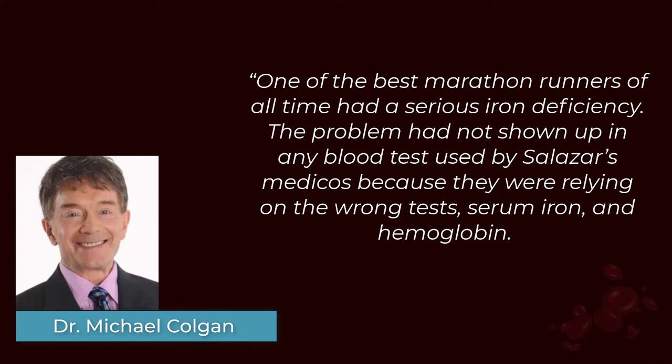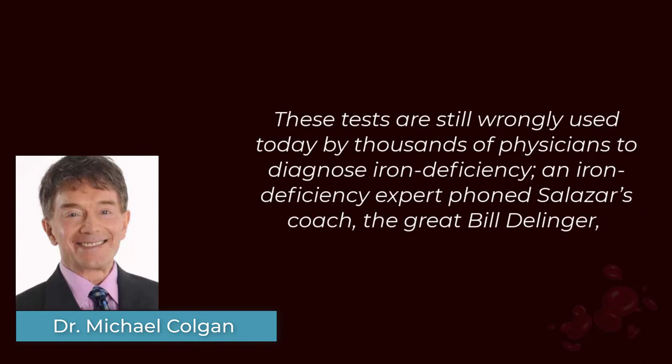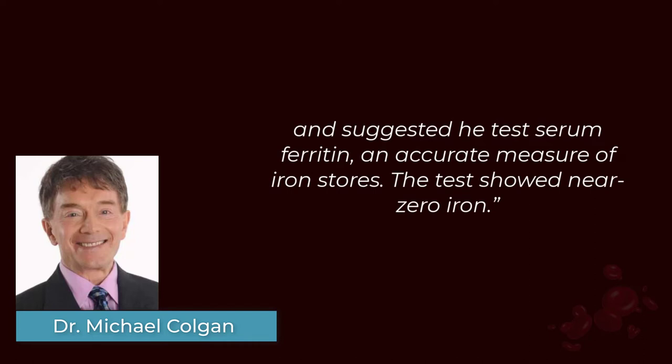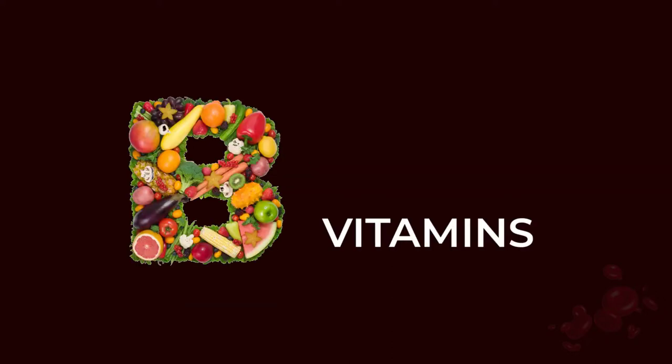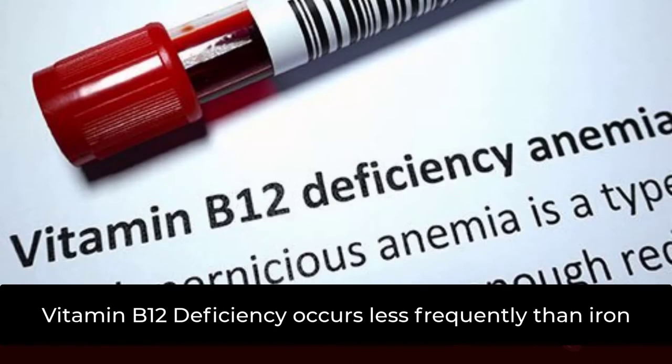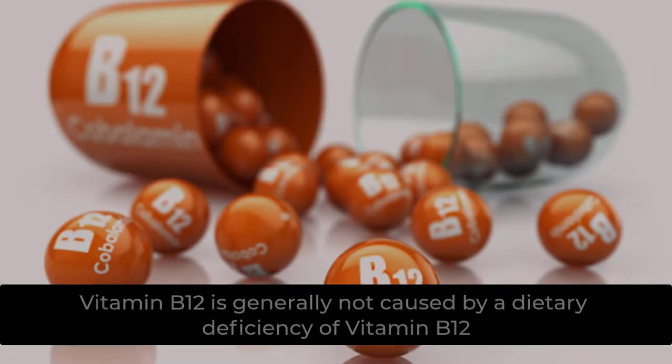The problem was that Salazar's doctors were relying on the wrong tests — serum iron and hemoglobin — which are still wrongly used today by thousands of physicians to diagnose iron deficiency. An iron deficiency expert contacted Salazar's coach, the great Bill Dellinger, and suggested testing serum ferritin, an accurate measure of iron stores. The test showed near-zero iron.